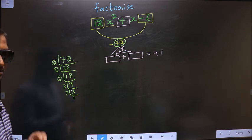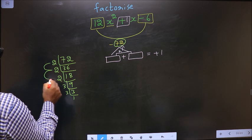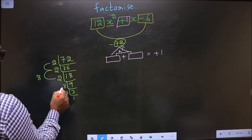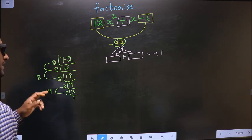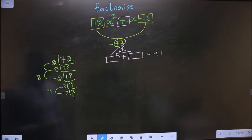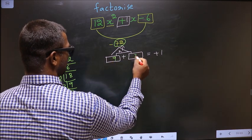So the two numbers should be 2×2×2 = 8, and the second number is 3×3 = 9. 9 - 8 = 1, and 9×8 = 72. So here you put 9 and here you put 8.